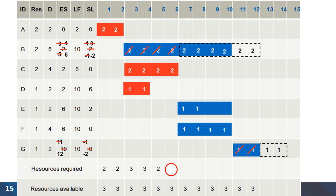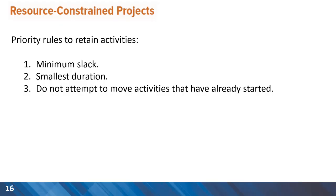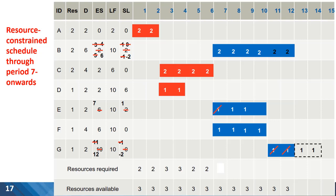For the sixth time period, again the only option is to move activity B, and it further delays the completion of the project to 14 days. Now the slack for both activity B and G are negative 2. Revisiting priority rules, we can decide on the next move. For solving the resource leveling problem in the seventh period, the required number of resources is 4 and we need to reduce it to 3. The only activity with slack is E, and based on the priority rule we will move this activity and delay the early start date to 7. The slack is reduced to 1 with no delay for project completion yet.